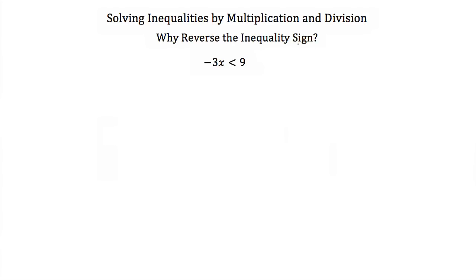So why do we reverse the inequality sign when we multiply and divide by a negative number? Well, let's look at this example here. We have negative 3x has to be less than 9. If I divide both sides by negative 3, I get x is less than negative 3. Now I haven't switched my inequality sign yet, so let's see what happens if we don't switch it. Let's pick a number that's less than negative 3 and plug it back into this original equation.